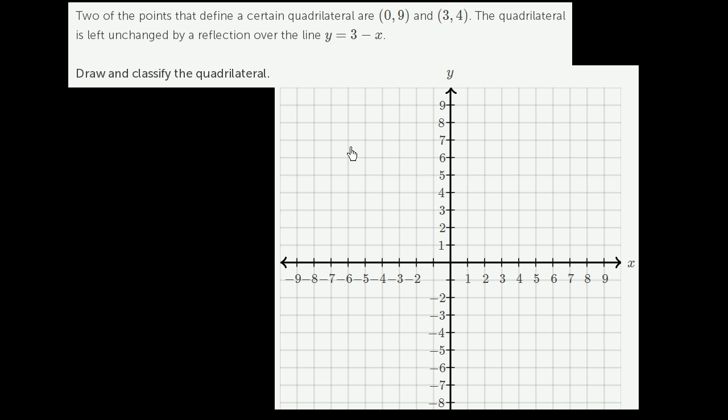So let's at least plot the information they give us. The point (0,9), that's one of the vertices of the quadrilateral. That's that point right over there. And another one of the vertices is (3,4). That's that right over there.